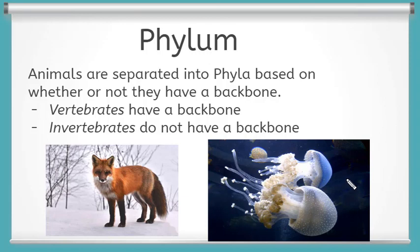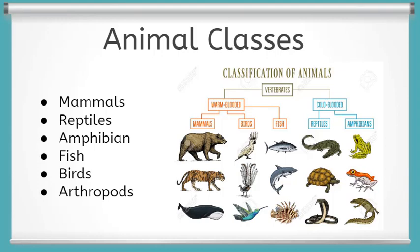Classes are the next level on the taxonomy after phyla. Invertebrates don't have specific classes. However, there are six vertebrate classes: mammals, reptiles, amphibians, fish, birds, and arthropods. Later in this video, we will delve deeper into the six vertebrate animal classes.